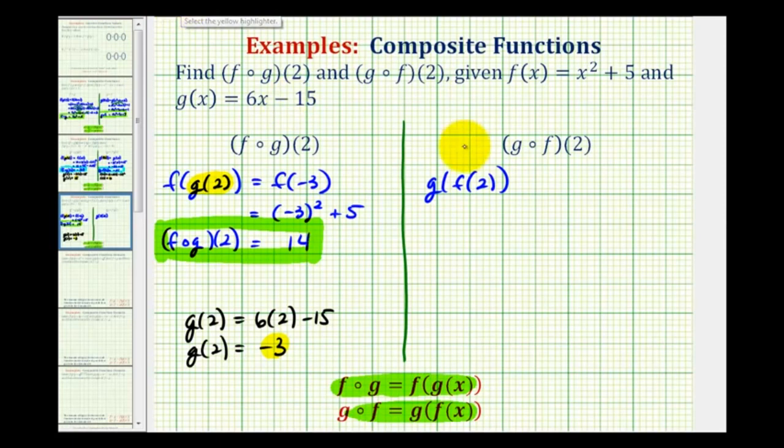And we'll go ahead and do this below. Since f of x is equal to x squared plus 5, f of 2 is going to be equal to 2 squared plus 5. Well, 2 squared is 4, plus 5 is equal to 9. So f of 2 is equal to 9.